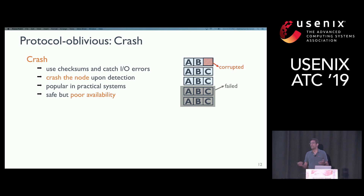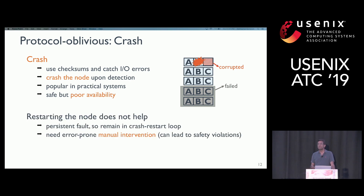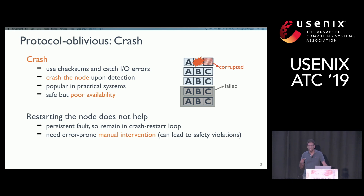Note that restarting the node doesn't help because the problem is persistent — a storage fault. The node would recover, come back, hit the same storage fault, and crash again, remaining in a crash-restart loop. Taking the node out of this loop requires manual intervention, which can be error-prone, as illustrated by the delete-rebuild approach. Here is another interesting approach called 'truncate': instead of crashing, the node truncates the faulty portion of data and continues to operate, leaving availability unaffected. But surprisingly, this can lead to global data loss even with redundant copies.